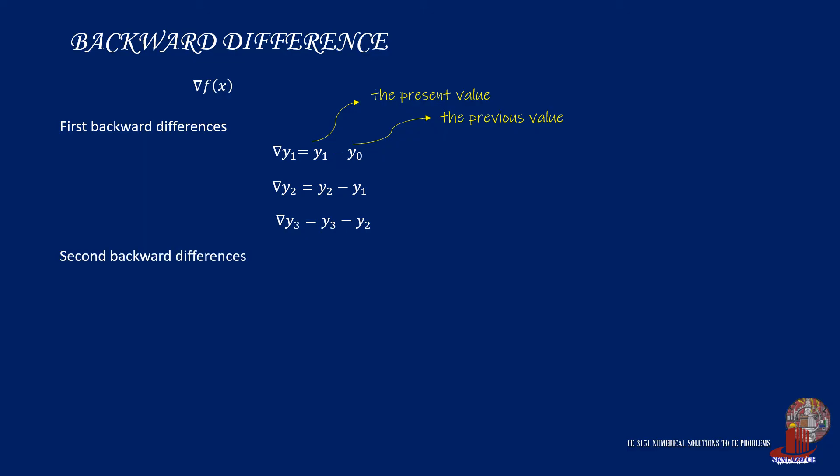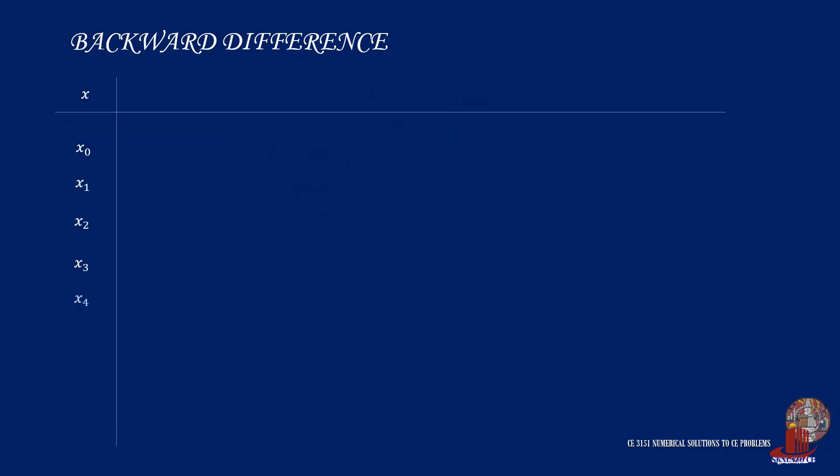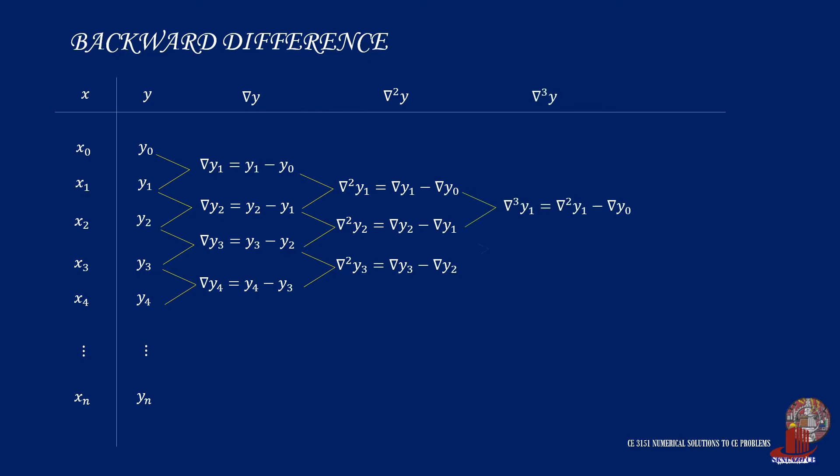For the second backward differences, the same procedure will be followed, but in this case, nebula squared of Y1 is then nebula Y1 minus nebula Y0, and the pattern continues. When placed in a table, backward difference will be very similar with the forward difference, although we are going to use nebula instead of delta, and start with nebula Y1 instead of Y0. Similarly, as its name says, the last values of each difference set will be considered as leading backward differences.